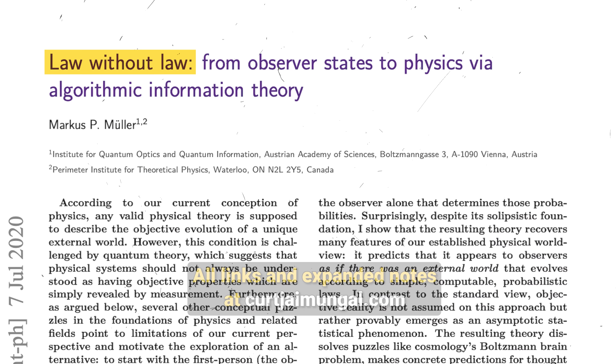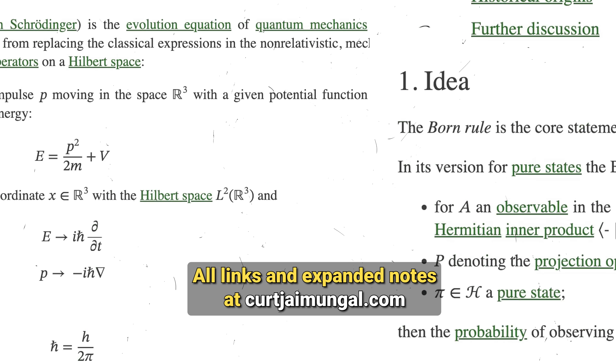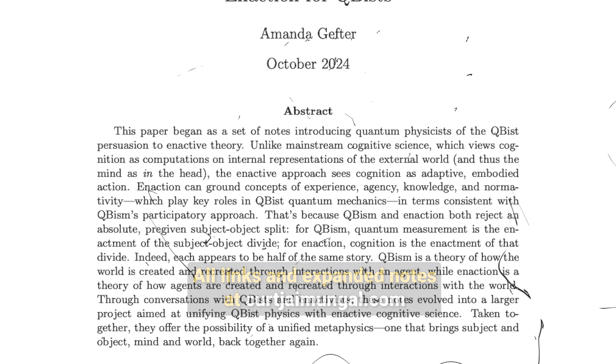Recent papers keep trying to square this circle — there's a paper literally titled 'Law Without Law,' which appeals to emergent regularities from quantum mechanics. But quantum mechanics itself has the Schrödinger equation and the Born rule, so 'law without law' becomes like alcohol-free beer — why are you even here? QBist approaches say that laws are features of our beliefs, not reality, claiming this dissolves the problem by denying there's anything to explain.